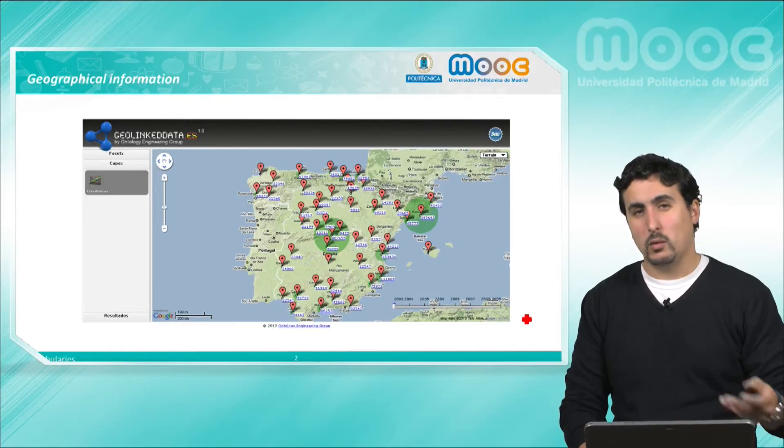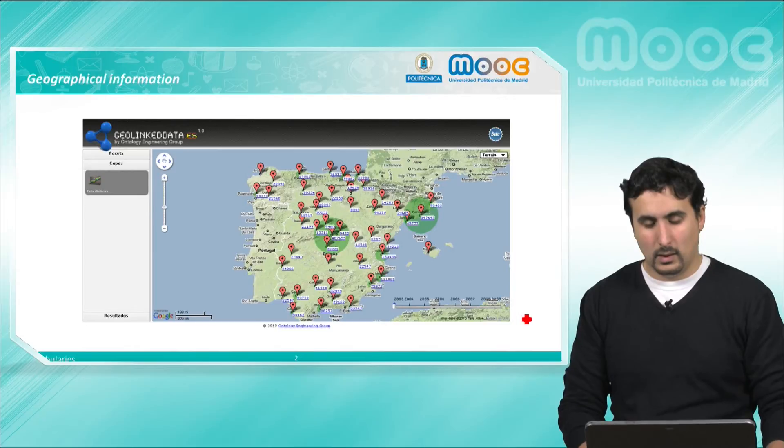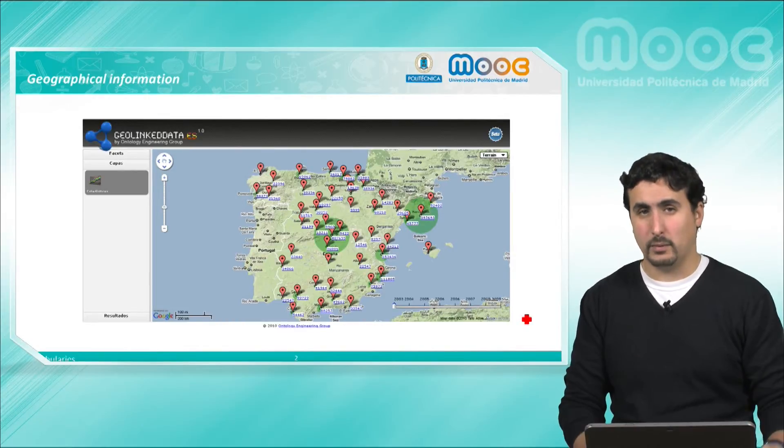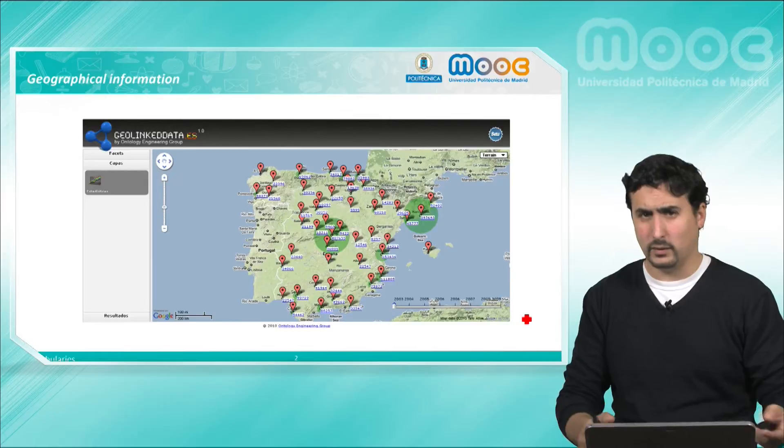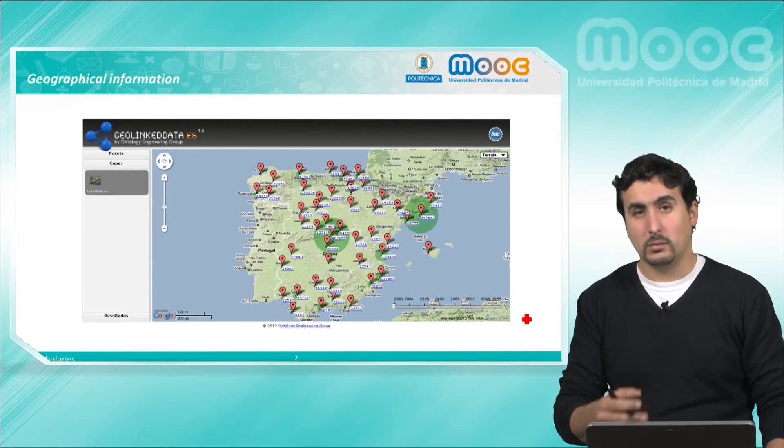Geographical information is one of the most common types of data that we can find available, which allows us to draw information about resources on a map. For example, if you have information about touristic places or places of interest, we can represent them on a map using points.